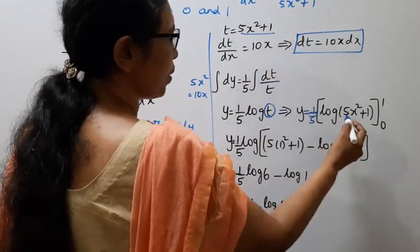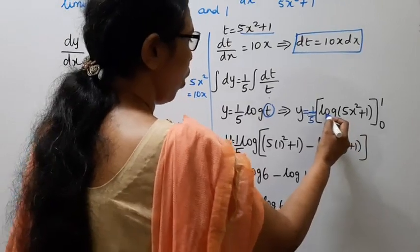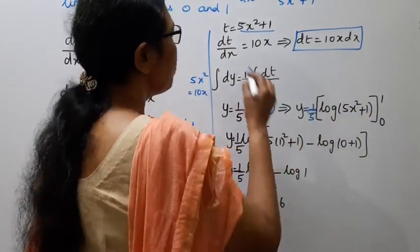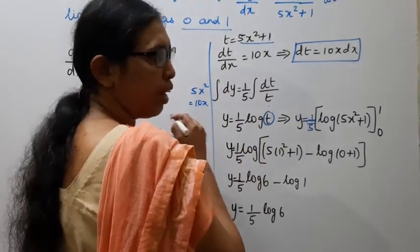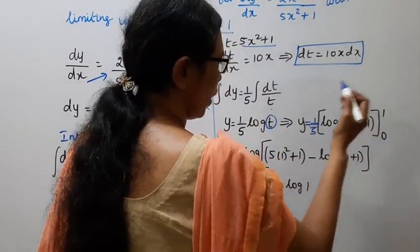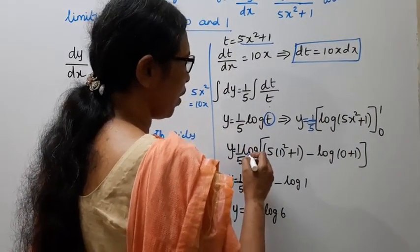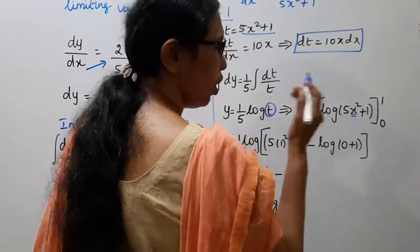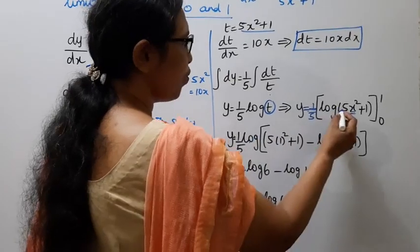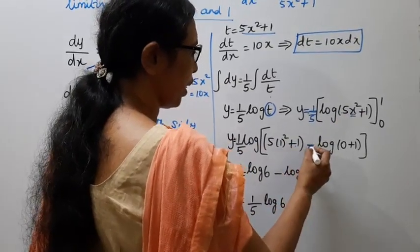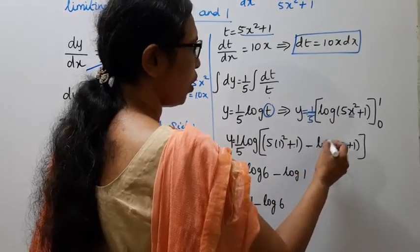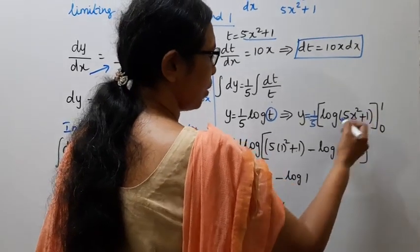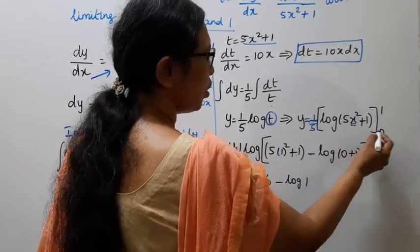Substituting back t equals 5x squared plus 1, we get y equal to 1 by 5 log of (5x squared plus 1). Now applying the limits 0 and 1: from 0 to 1, y equal to 1 by 5 times log evaluated at upper limit minus lower limit.